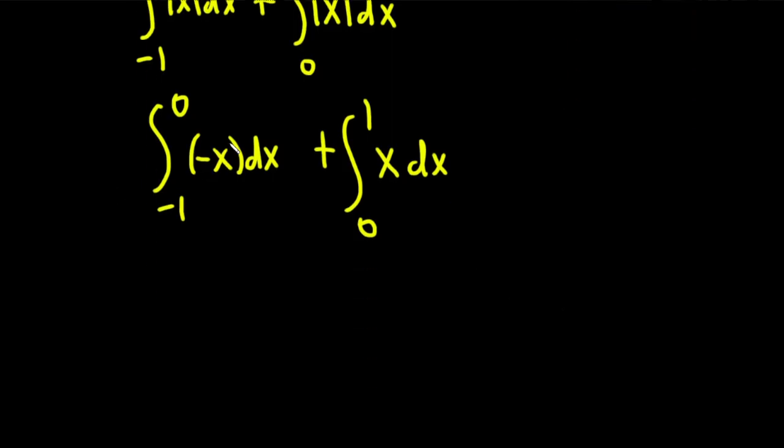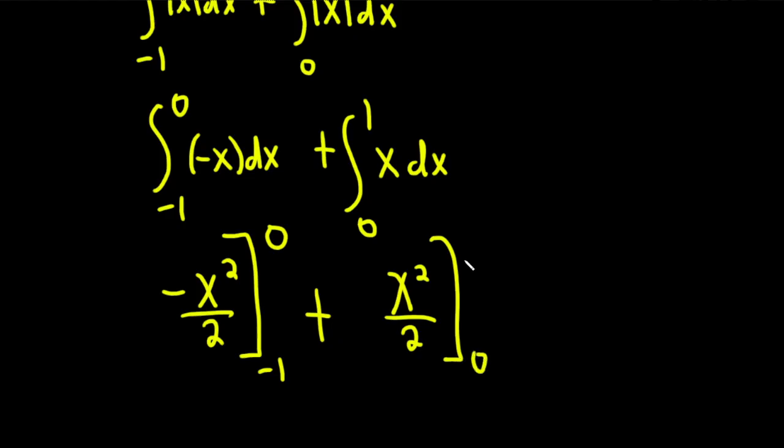So let's see here, this is just going to be a power rule integral. We have negative x squared over 2, right? Just use the power rule, add 1, divide. I'm going from negative 1 to 0, plus, and this one would be x squared over 2, going from 0 to 1, right? Just using the power rule, there's a 1 here, there's a 1 here, and you just add and divide by 2.